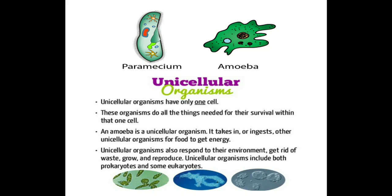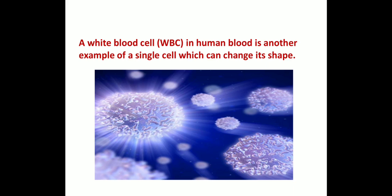Unicellular organisms include both prokaryotes as well as eukaryotes. A white blood cell is an example of an exception — it is a single cell within a multicellular organism, specifically in human beings. WBC can change its shape and is able to fight against diseases.